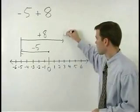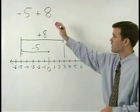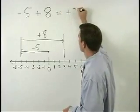So we end up at positive three. So negative five plus eight is positive three.